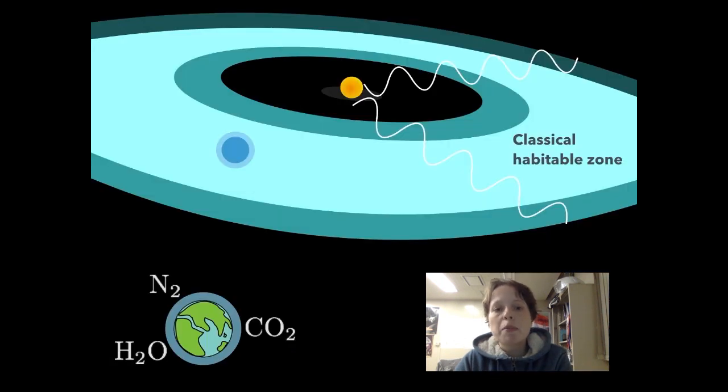The classical habitable zone is where an Earth-like planet, that is, a planet with our surface pressure, atmospheric gases and geological processes, can support water on the surface. Often in exoplanet literature, this is simply referred to as the habitable zone, as we don't yet know about planets other than the Earth that can support life.